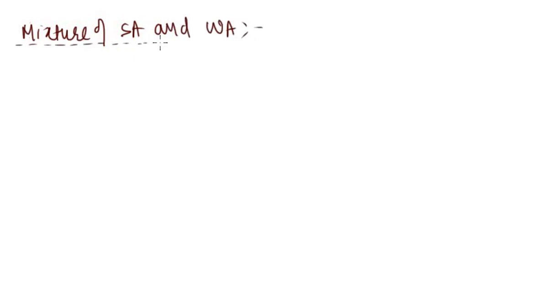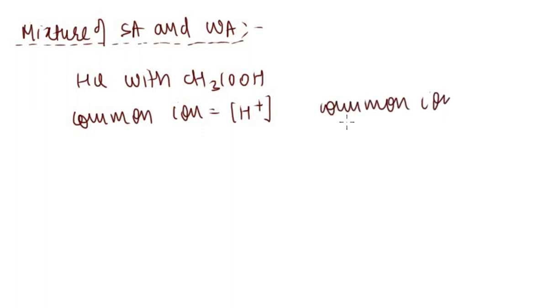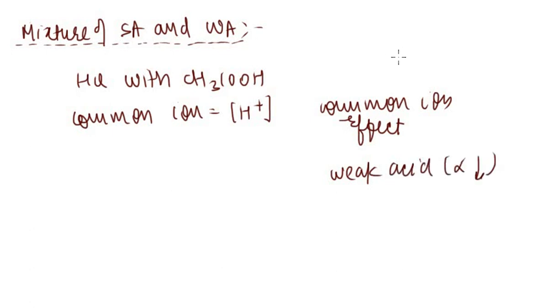We will calculate the pH of a mixture of strong acid and weak acid. When mixing a strong acid like HCN with a weak acid like acetic acid, both release H⁺ as a common ion. The common ion effect will be observed, meaning the degree of dissociation (alpha) of the weak acid will decrease.